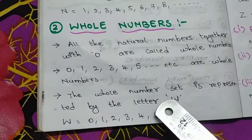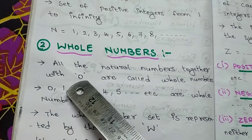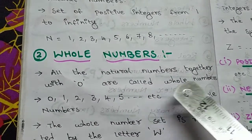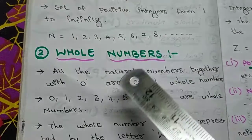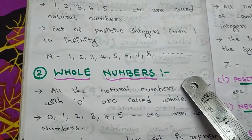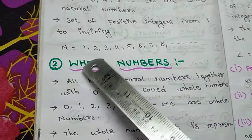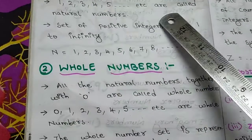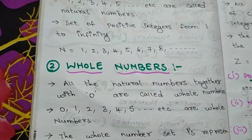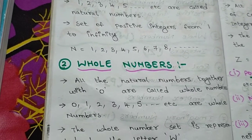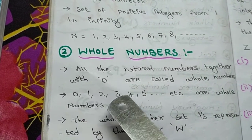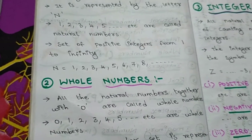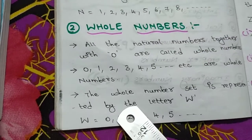The next category is whole numbers. All the natural numbers together with zero are called whole numbers. So natural numbers plus zero — together they are called whole numbers. There is a zero in whole numbers. Zero is not a natural number. So whole numbers: 0, 1, 2, 3, 4, 5, and so on — infinite. All those are whole numbers. The whole numbers set is represented by capital W. So W equals 0, 1, 2, 3, like that.